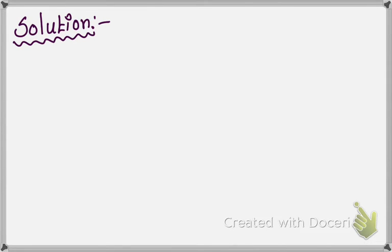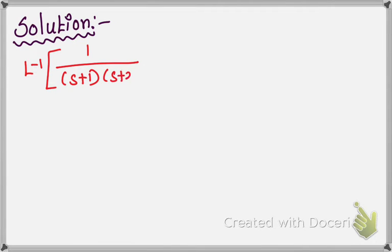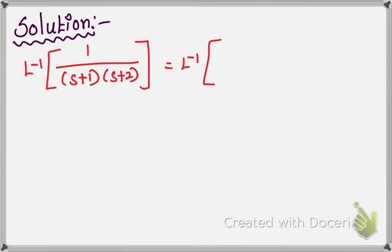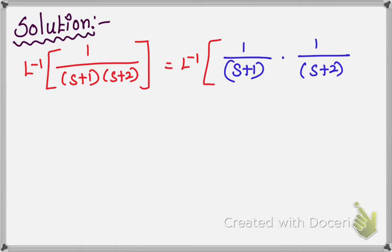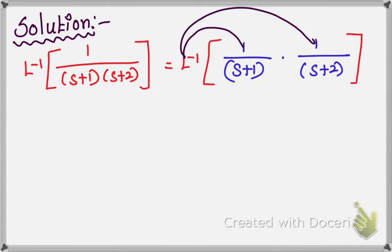Using convolution theorem, find the value. So, L inverse of 1 over (s+1)(s+2) equals L inverse of — you split the term into two separate terms. There are two terms; you split them into separate: 1 over (s+1) times 1 over (s+2). Now, again, we split them with L inverse — L inverse of the first term and L inverse of the second term.